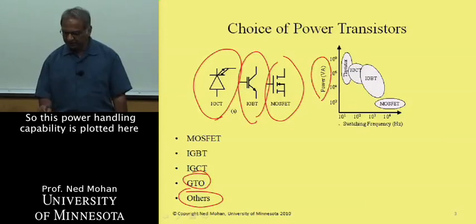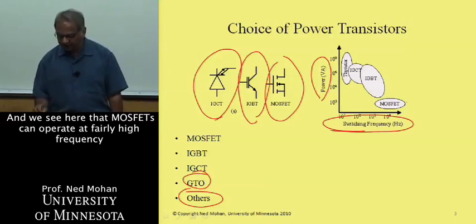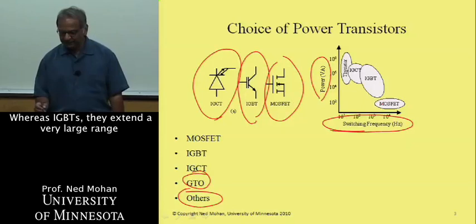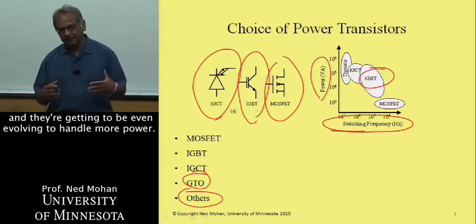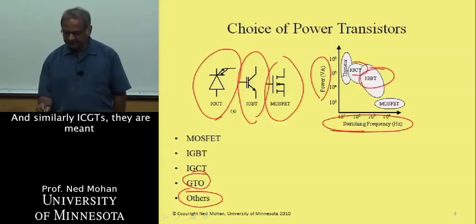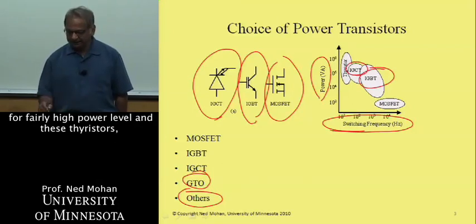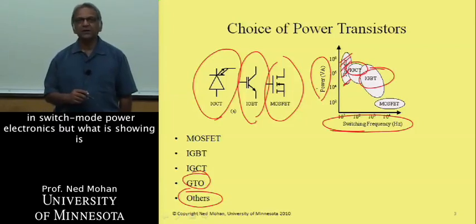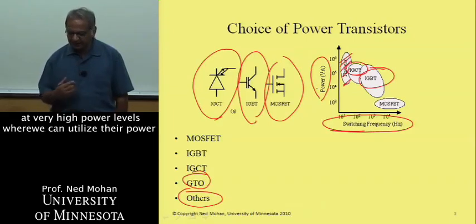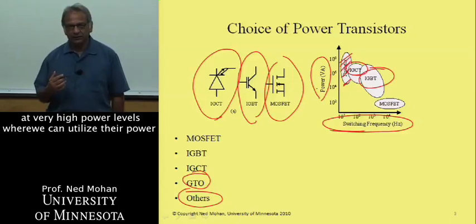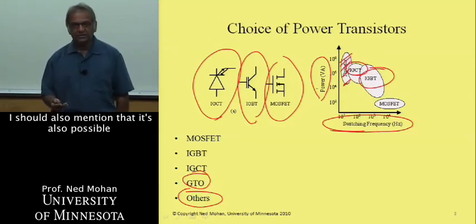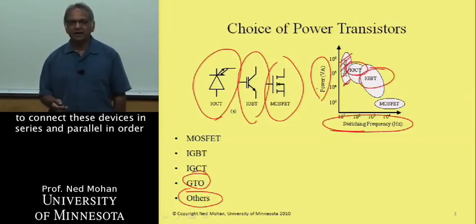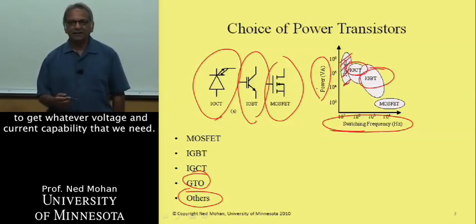This power handling capability is plotted here as a function of switching frequency. MOSFETs can operate at fairly high frequency but are limited in their power handling capability, whereas IGBTs expand a very large range and are evolving to handle even more power. IGCTs are meant for fairly high power levels. Thyristors, strictly speaking, are not used in switch mode power electronics, but at very high power levels — such as in high-voltage DC transmission — we can utilize their power handling capabilities. It's also always possible to connect these devices in series and parallel to get whatever voltage and current capability is needed.